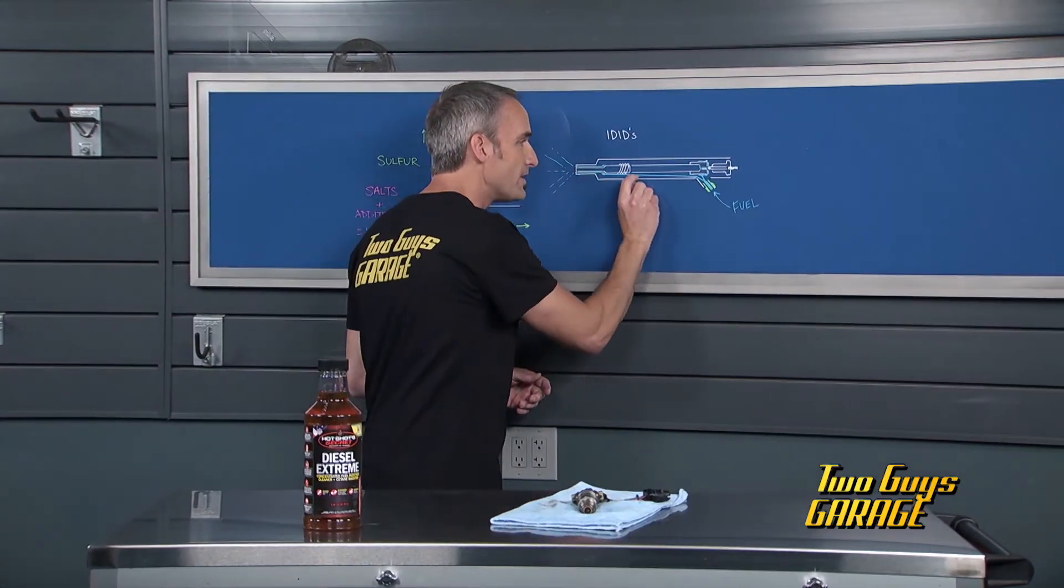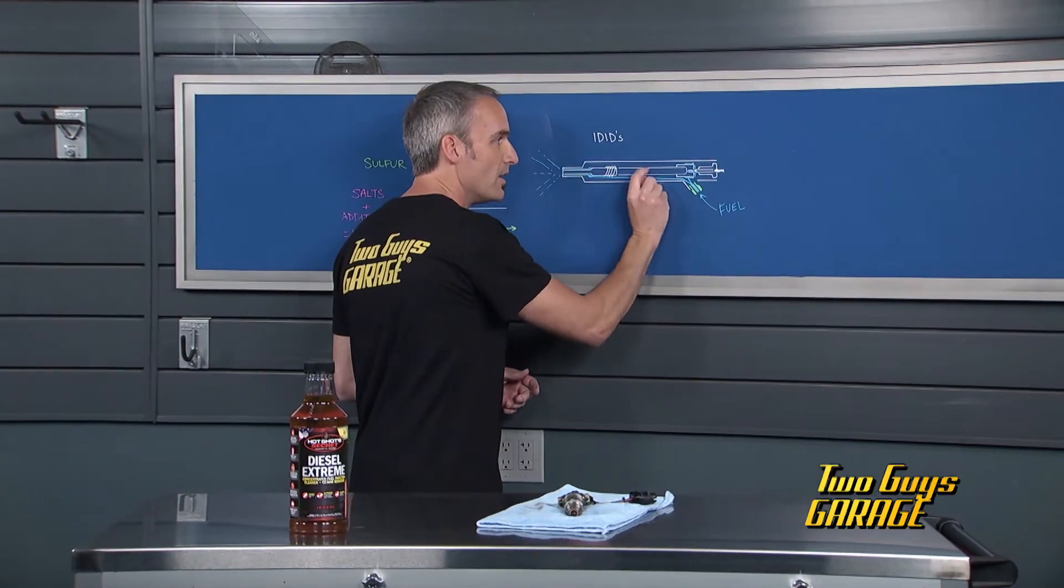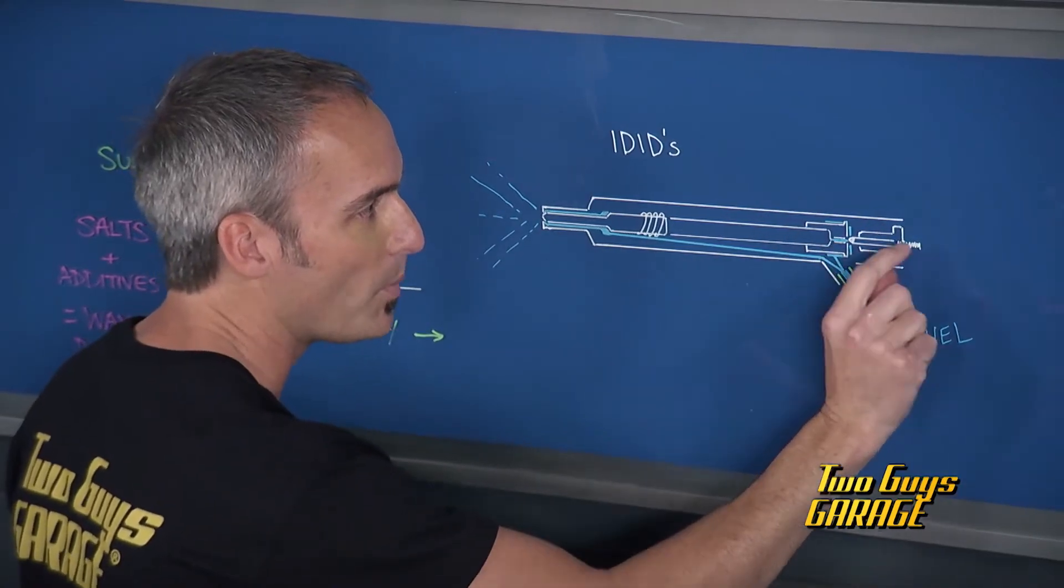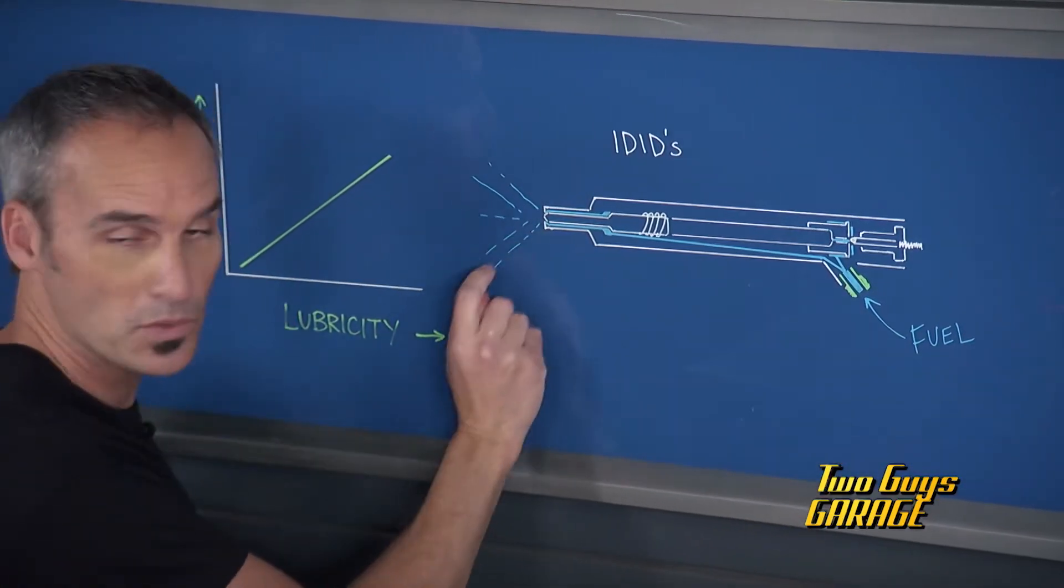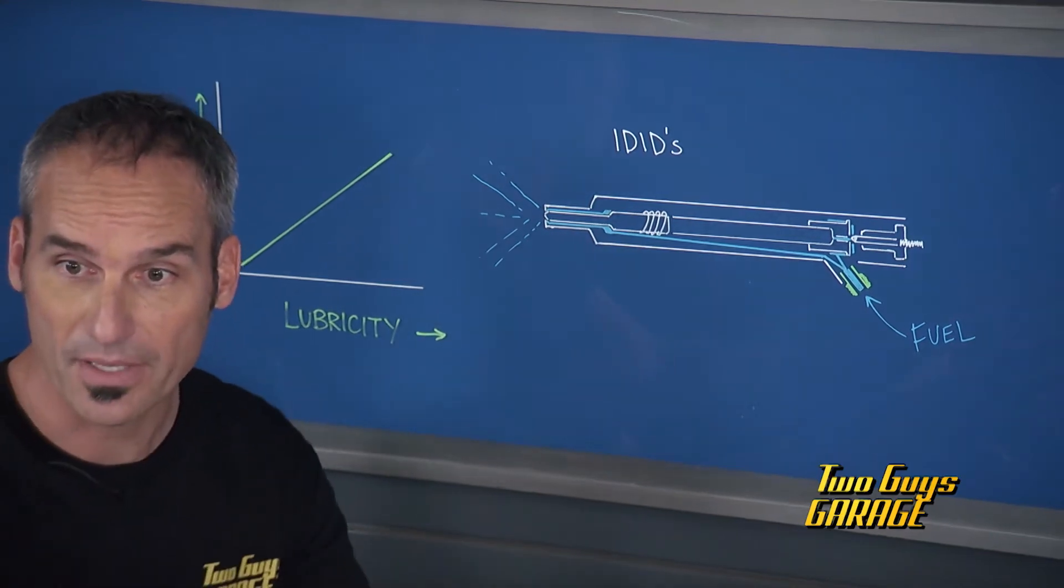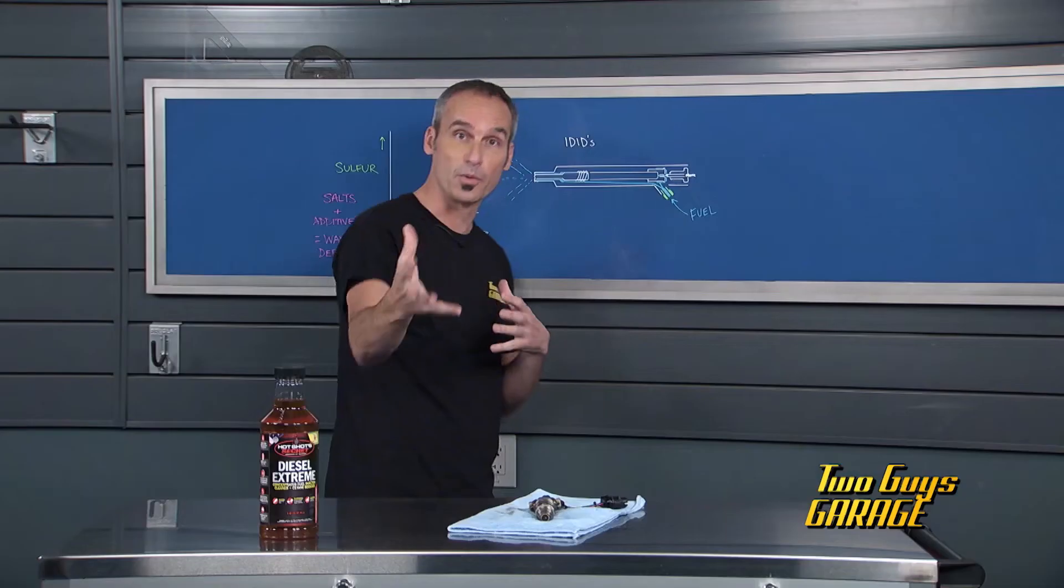We've got very tight tolerances here with the needle, and as your armature group opens this needle up, it pulls back and lets the fuel spray out in a very fine mist for good combustion, for performance and fuel economy.